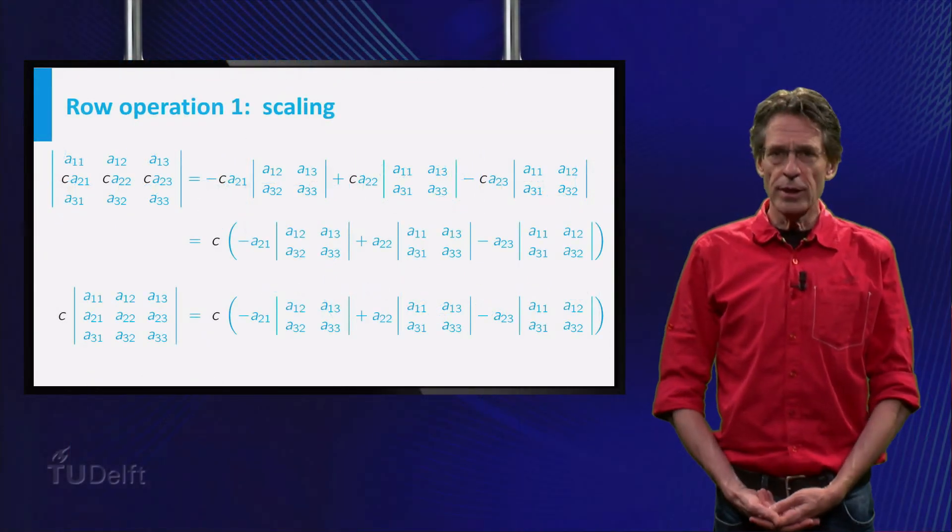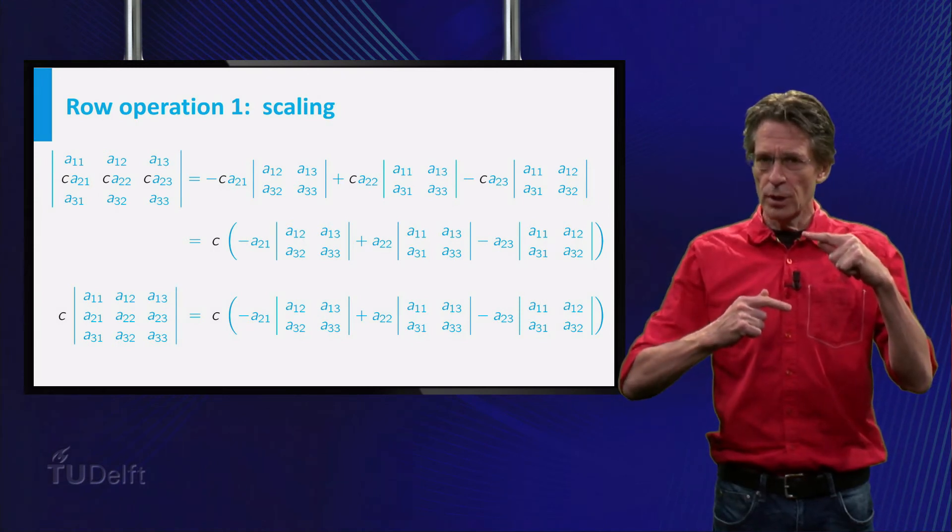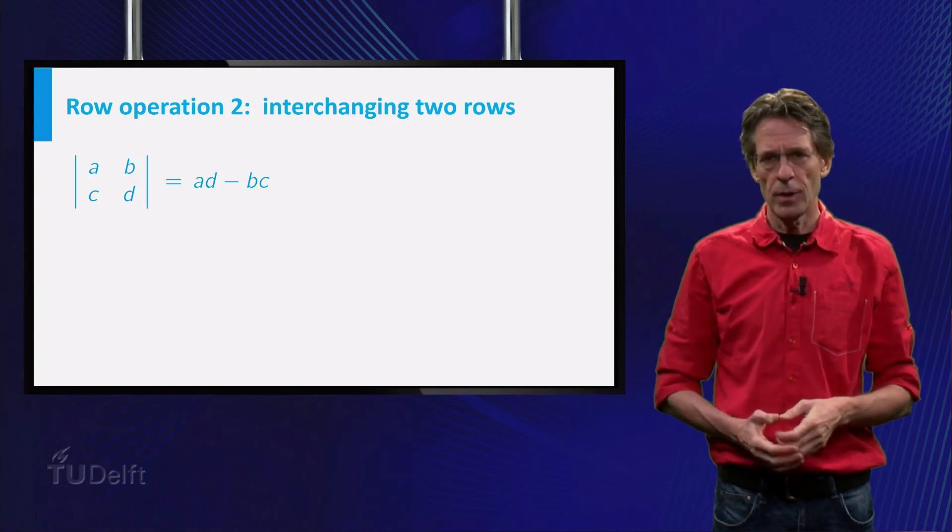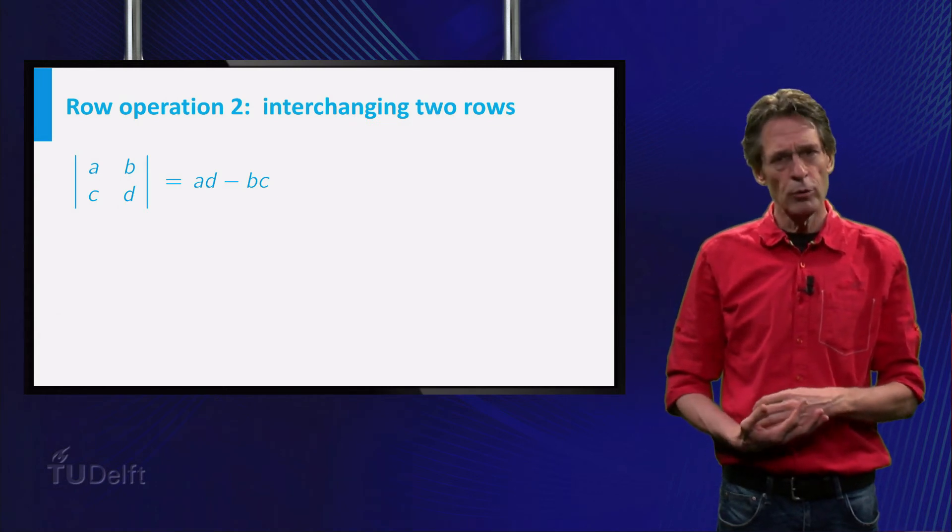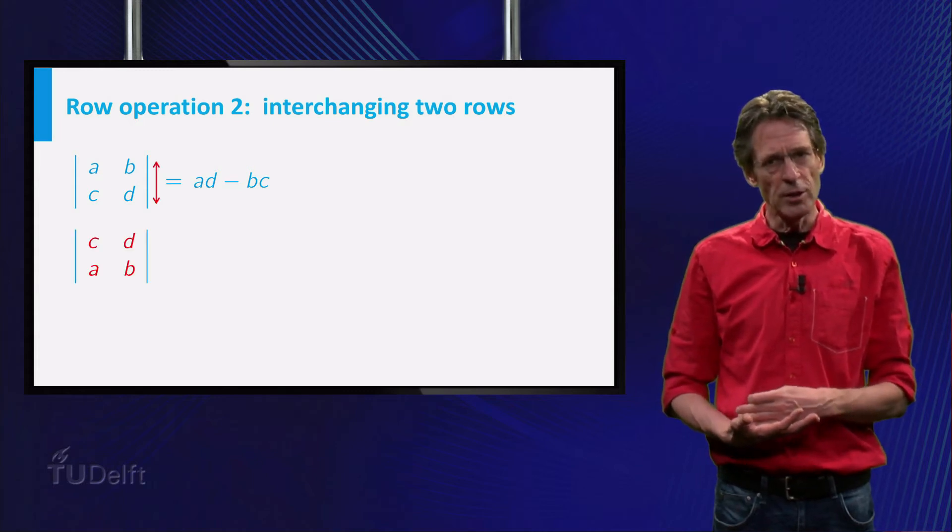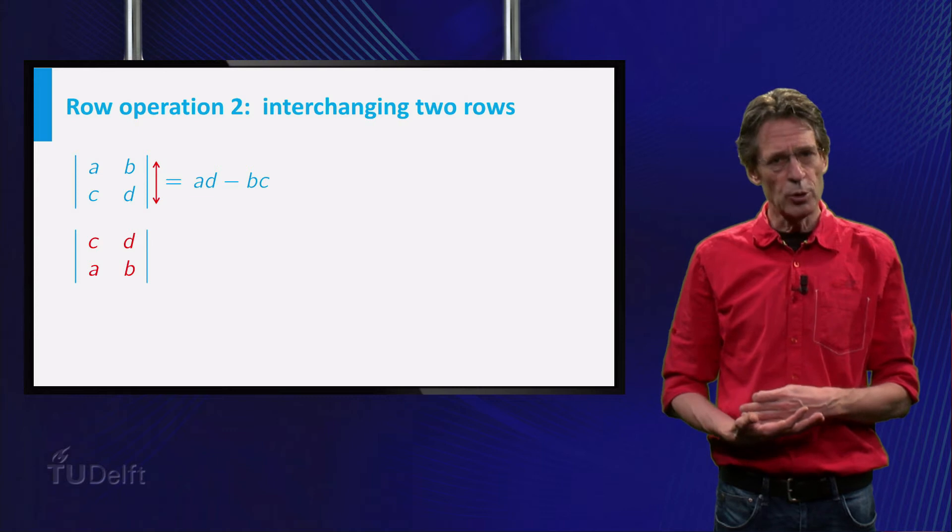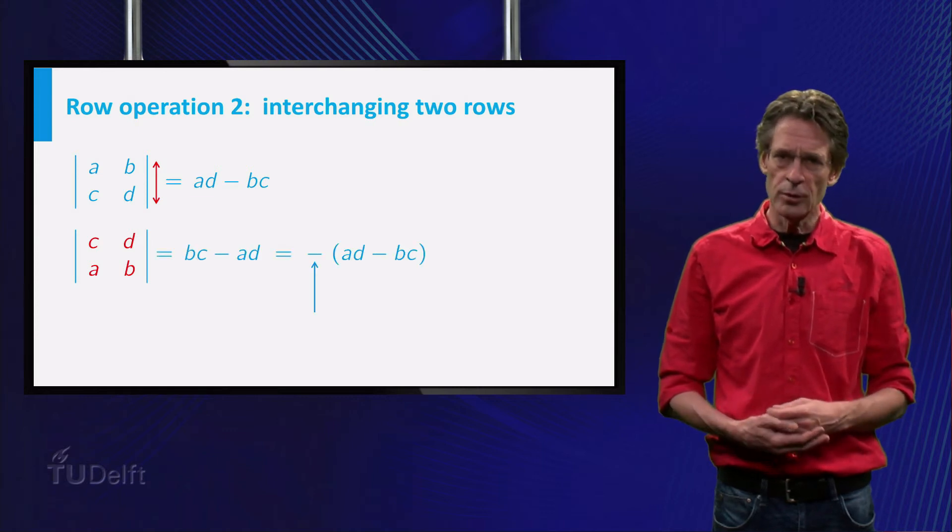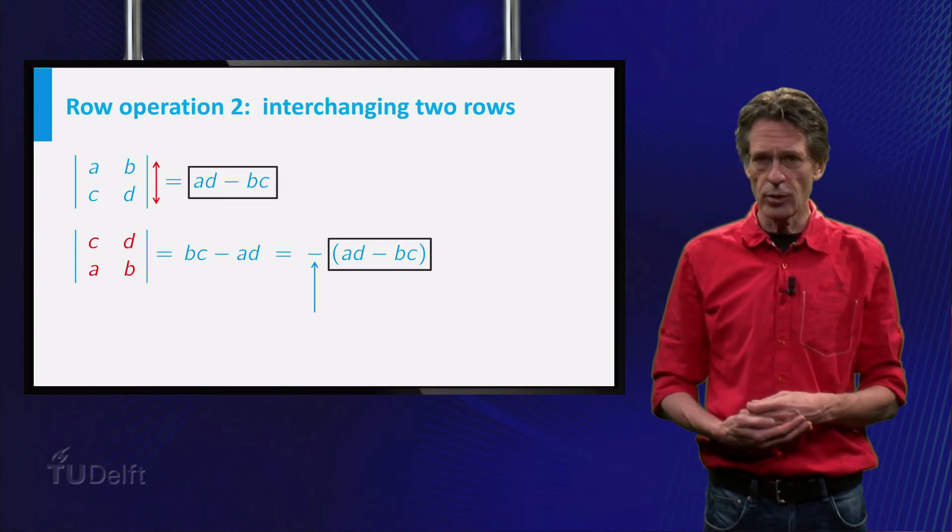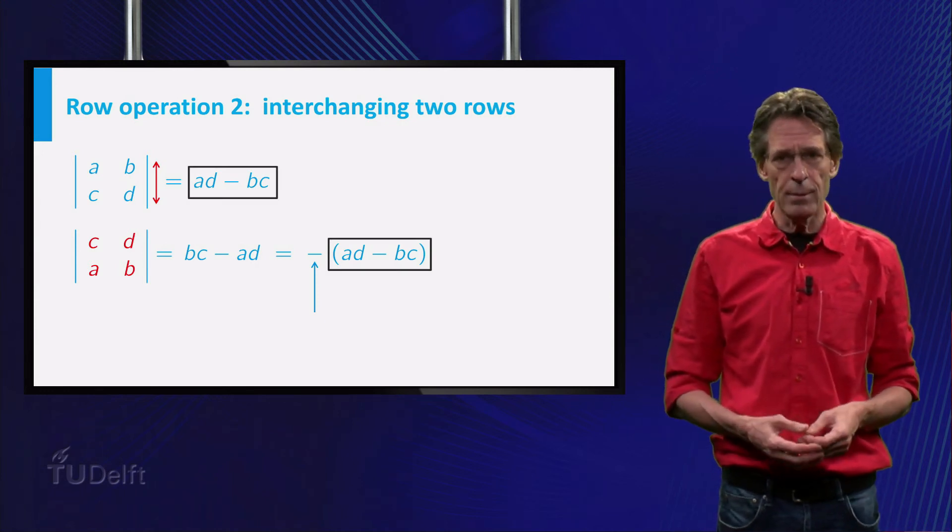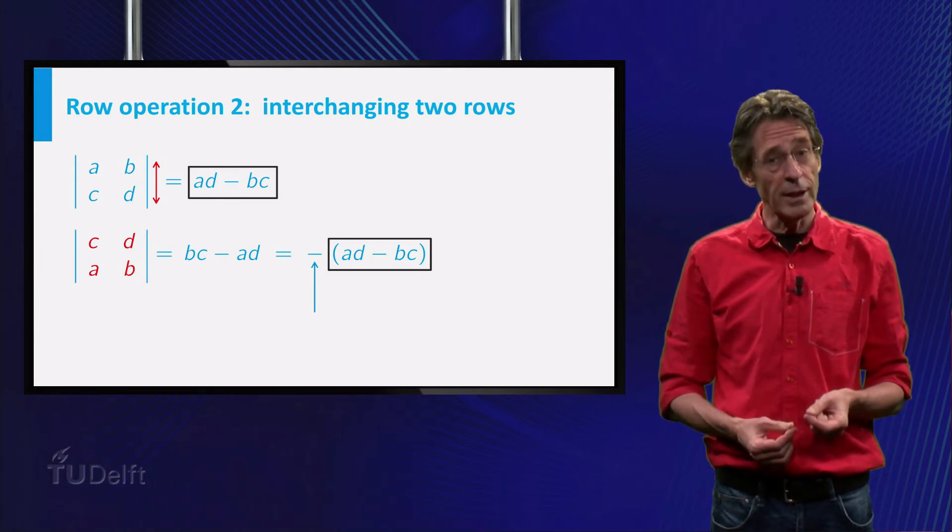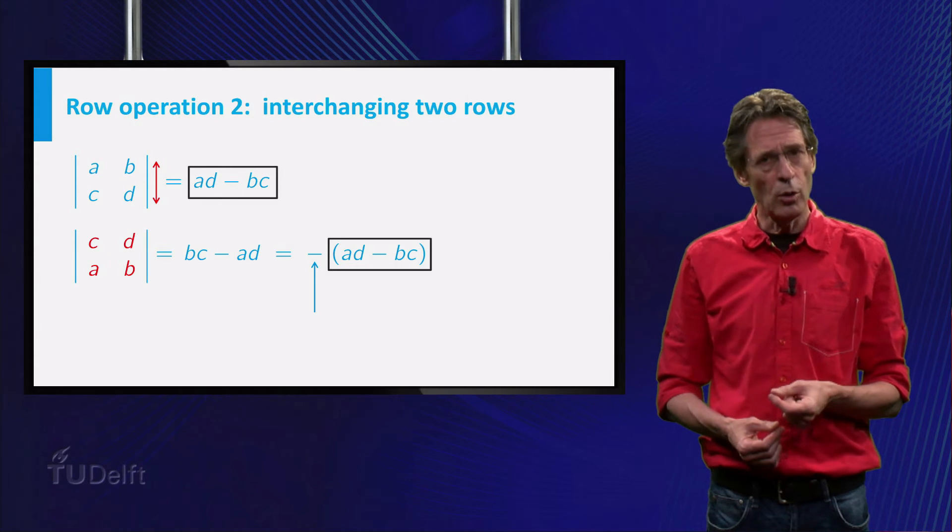The second row operation is swapping two rows. The effect on the determinant is that it gets an additional minus sign. Again, the slide shows the rule for a 2x2 matrix. If you swap the rows and find the determinants, you quickly observe that indeed the second determinant is minus 1 times the first. In general it can be shown that swapping any two rows in an n by n determinant gives an additional minus sign, so the net result is a change of sign of the determinant.